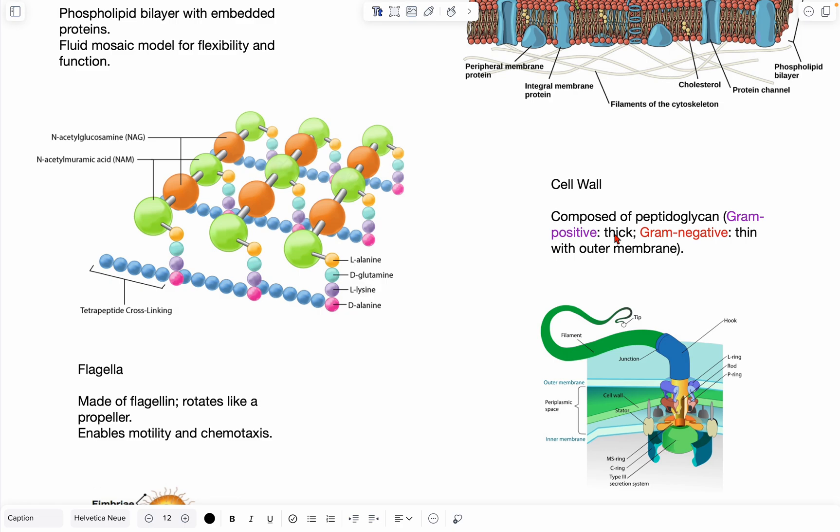And then something brief, which will be discussed later, is gram-positive and gram-negative. And in gram-positive bacteria, the layer is very thick, and it sort of retains the crystal violet stain, which is used in gram-staining.